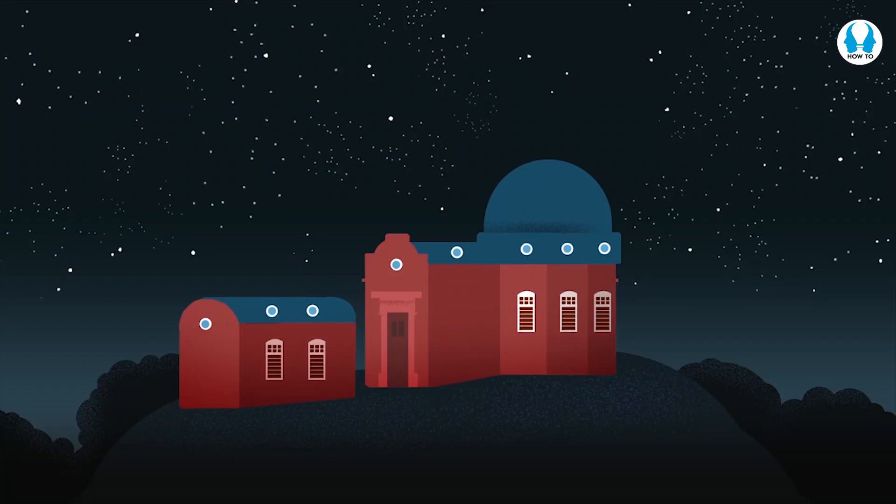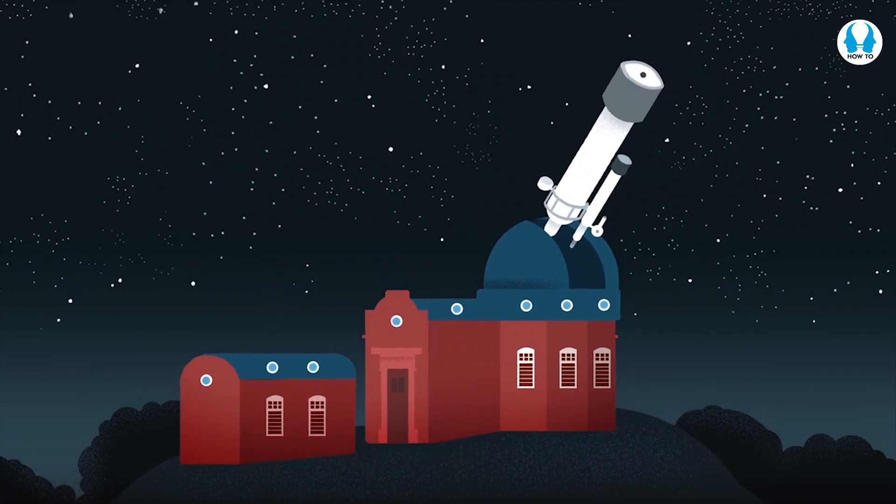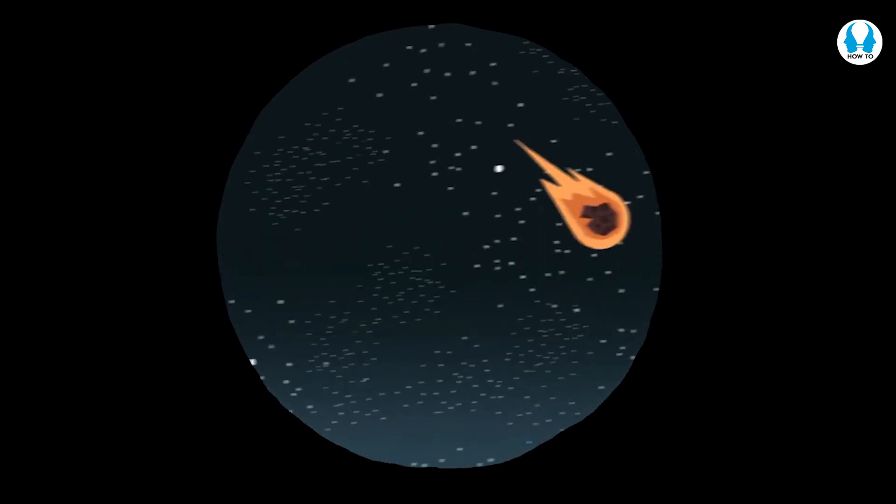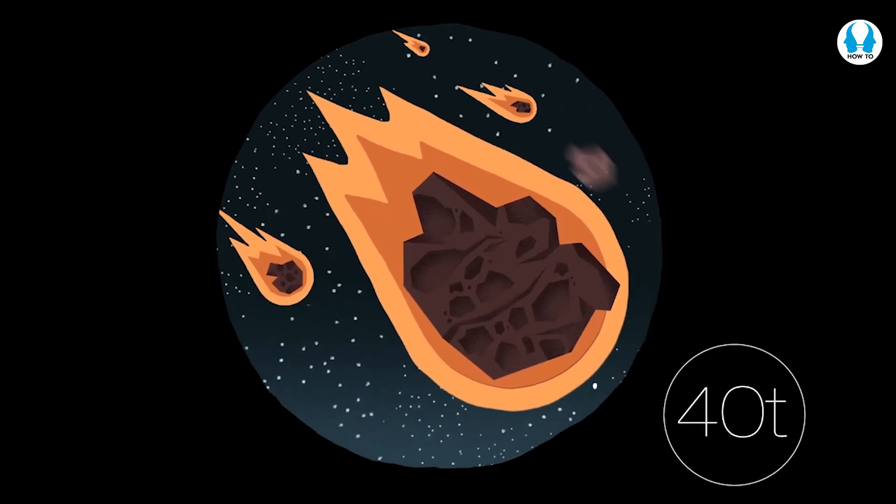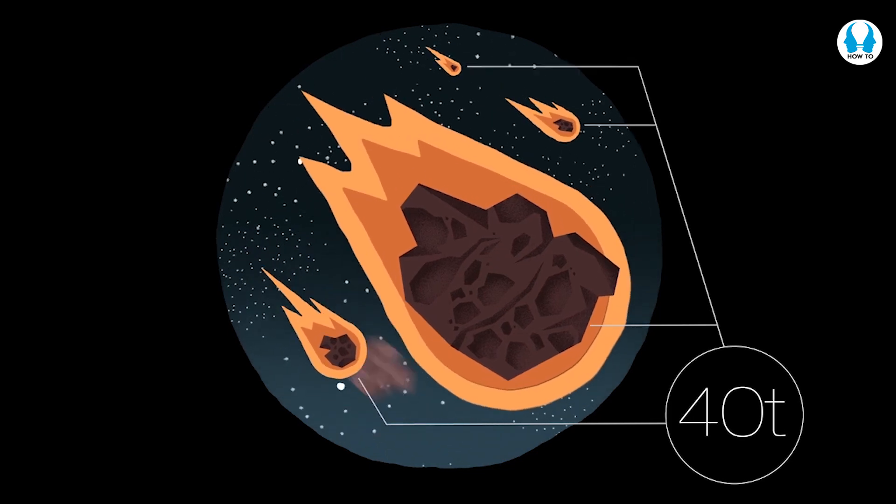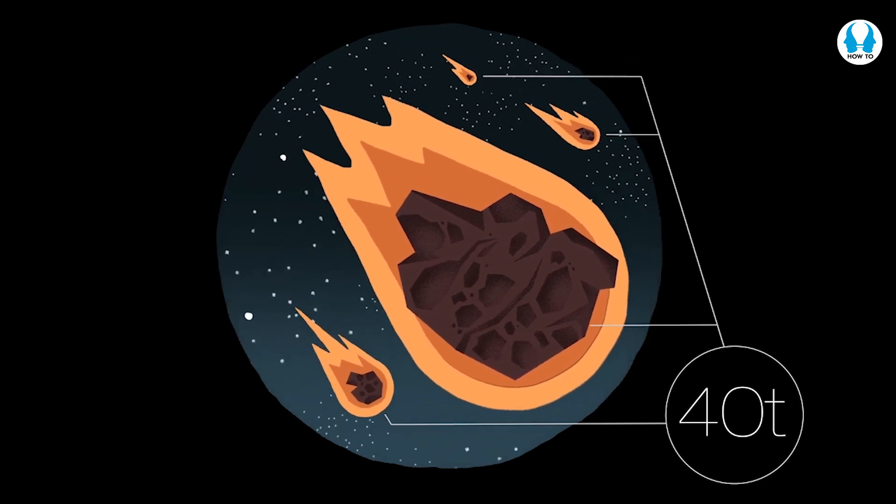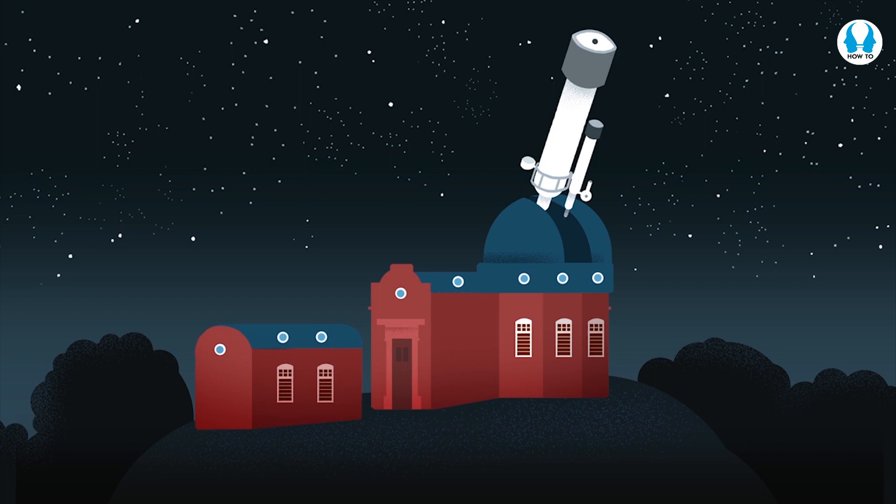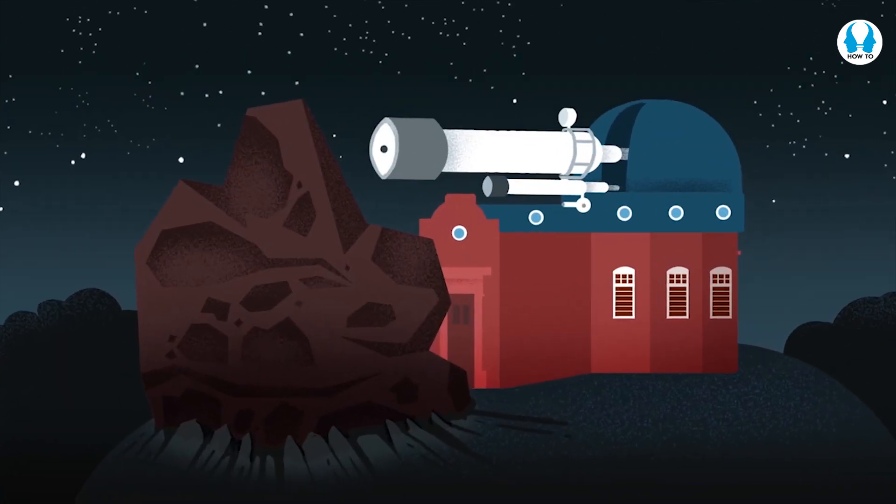In astronomy, most research is done with telescopes, but this isn't always the case. Over 40 tonnes of material falls on the Earth every day, and sometimes the pieces are large enough to survive their fiery journey through the atmosphere and reach the ground. These space rocks, called meteorites, contain the information we need to find out the age of our solar system.